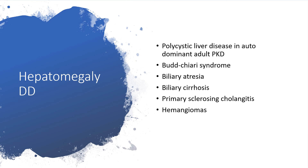Certain pathological conditions can cause hepatomegaly: polycystic liver disease in autosomal dominant adult polycystic kidney disease, Budd-Chiari syndrome, biliary atresia — if you haven't listened to my liver anatomy and biliary system presentations already published, please check my channel. Also biliary cirrhosis and primary sclerosing cholangitis.